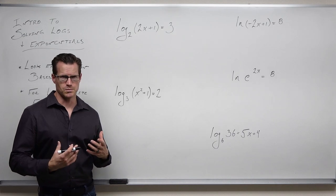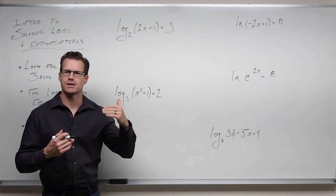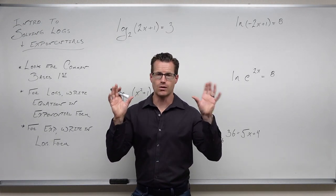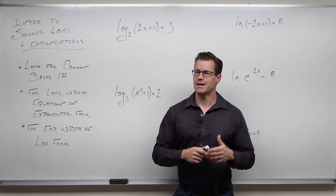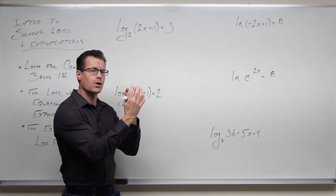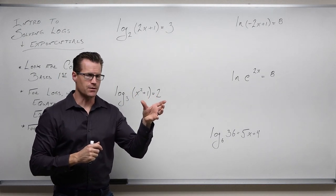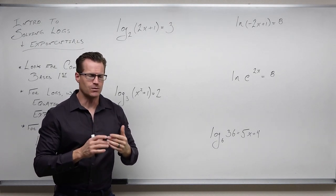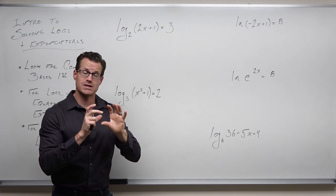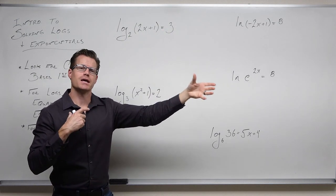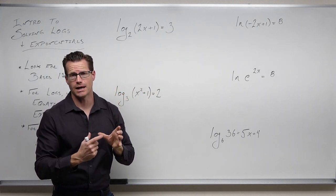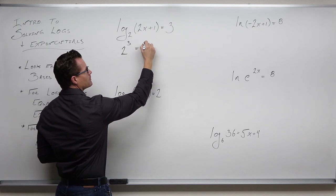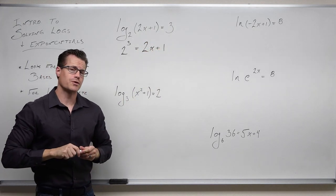Let's take a look: log base 2 of (2x + 1) equals 3. The thought process: number one, check if we have common bases. For logarithms, that means we need a log on one side and a log on the other. We don't have that. After that, we look for logs. If we have a log, we're going to isolate it — one log on one side, nothing else around it, and a constant on the other, which is what we have here. Once we have that log isolated, we have our base identified.